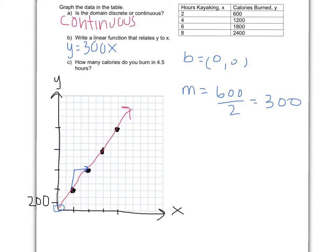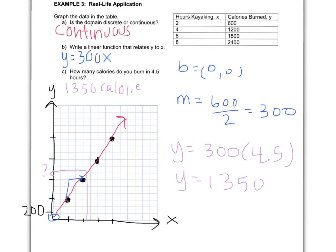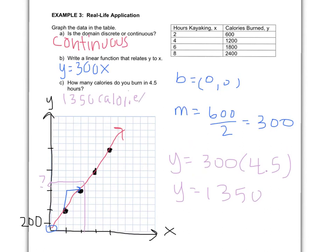And finally, letter C. How many calories do you burn in 4.5 hours? Now, there are two ways you can do this. You can either go to the graph and look at where it hits 4.5, and then just kind of trail it over and see where it hits. I wouldn't necessarily encourage you to do that because you're just kind of approximating where it is, and especially if it's not an exact point, it's going to be a little difficult. I would encourage you to go to the formula and instead of x, put 4.5. That gives you 1,350. So you can burn 1,350 calories.